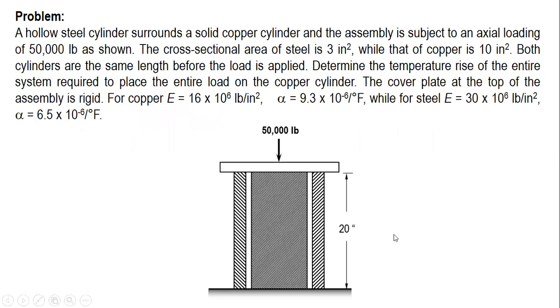Here's the problem. A hollow steel cylinder surrounds a solid copper cylinder, and the assembly is subjected to an axial loading of 50,000 pounds as shown. The cross-sectional area of steel is 3 inch square, while that of copper is 10 inch square.